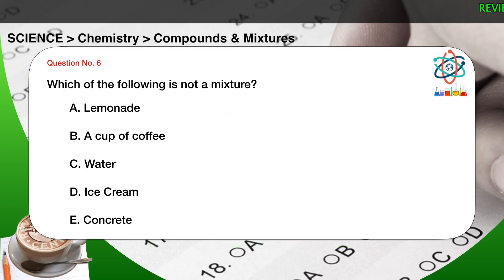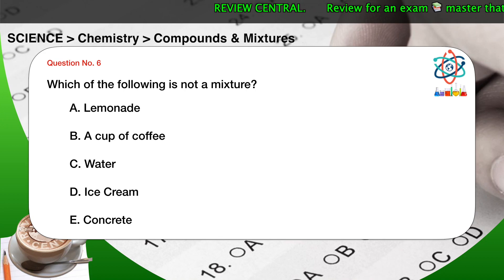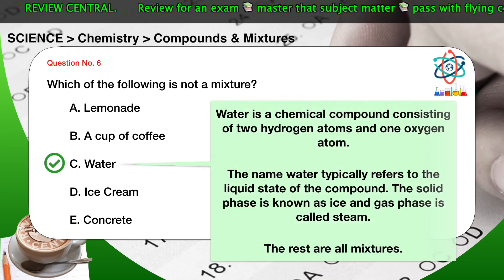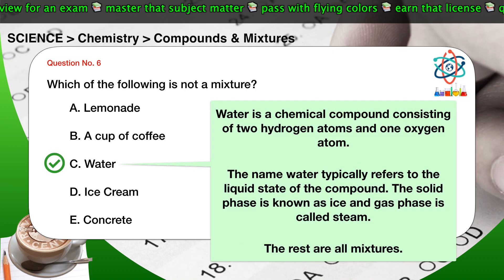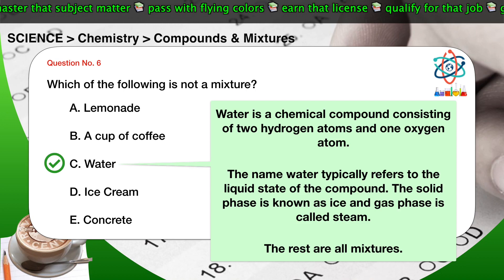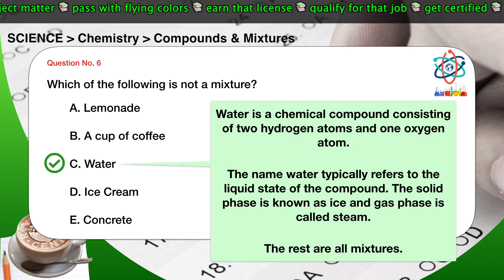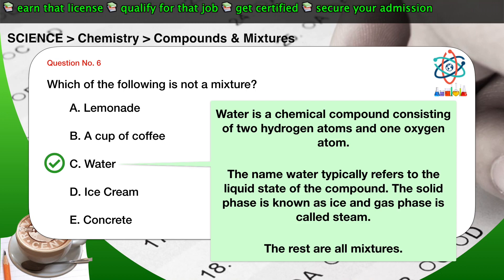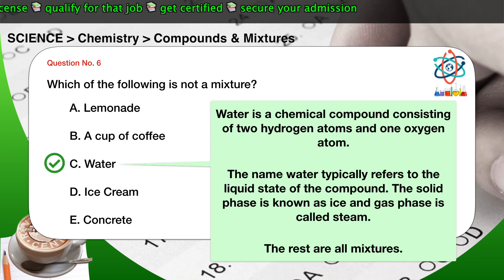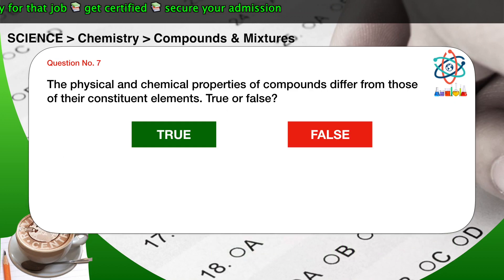Question number six: which of the following is not a mixture? A) Lemonade. B) Coffee and cream. C) Water. D) Ice cream. E) Concrete. The correct answer is C. Water is a chemical compound consisting of two hydrogen atoms and one oxygen atom. The name water typically refers to the liquid state of the compound; the solid phase is known as ice and the gas phase is called steam. The rest are all mixtures.